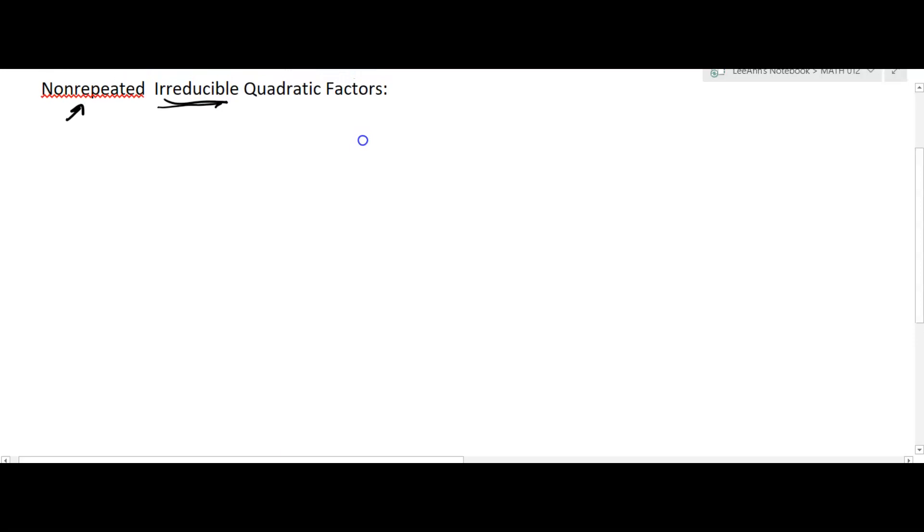So that's their quadratic factors. We'll give you an example. Let's say you have something like 3x plus 7 over x squared plus x plus 2. This would be nonrepeated because there's only one of them, it's irreducible, you can't factor that quadratic.